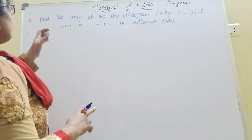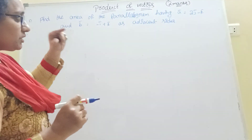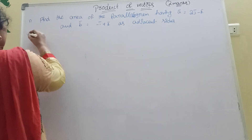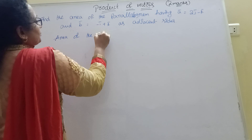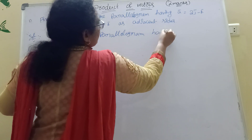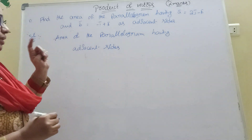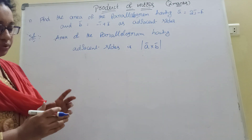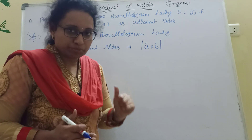Now the third problem: find the area of the parallelogram having vectors A bar and B bar as adjacent sides. The formula for area of a parallelogram with adjacent sides A bar and B bar is: modulus of A bar cross B bar.